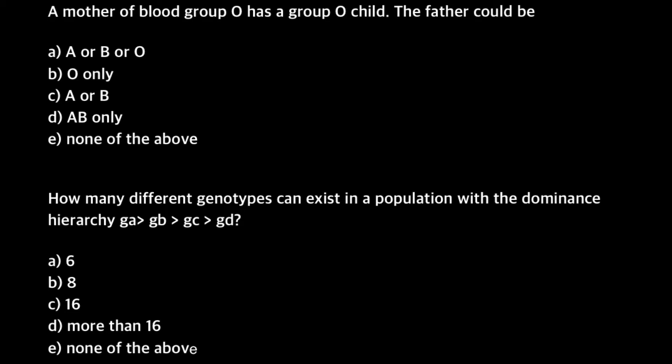So here is the first question: a mother of blood group O has a group O child — the father could be? There are five answers to choose from, and I have a hint for you: this is not answer E. We have a correct answer here, and before I explain how to solve this problem, let me list all the genotypes and phenotypes in the ABO blood group system.